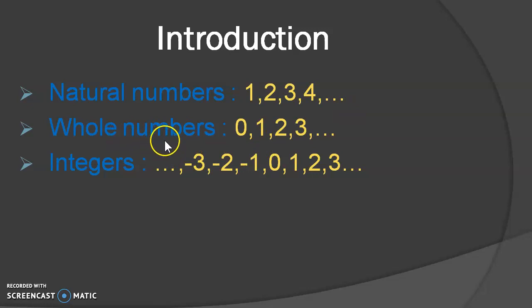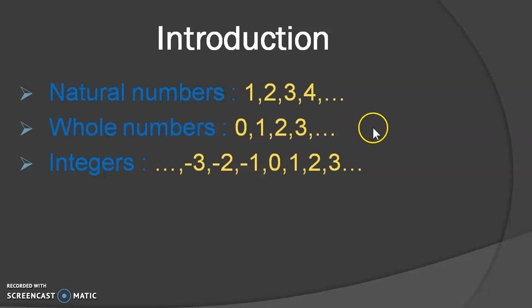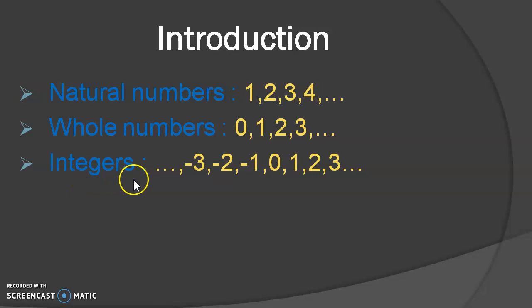The next is Whole Numbers. What are whole numbers? All the natural numbers along with the number 0, that is 0, 1, 2 and 3 and so on, are known as the whole numbers. The next is Integers. These integers include the negative numbers, the positive numbers, and even 0.